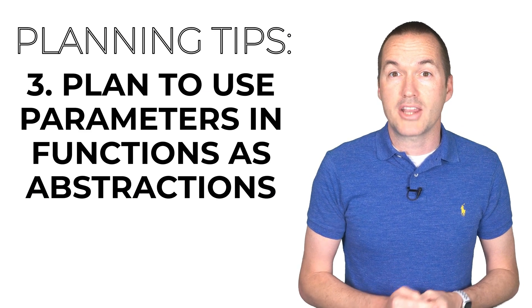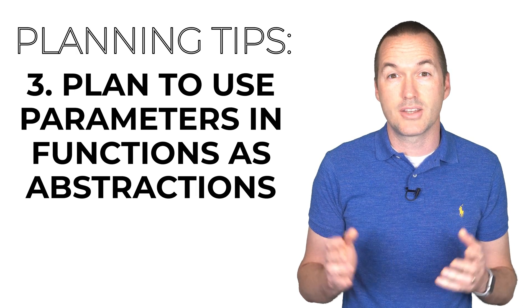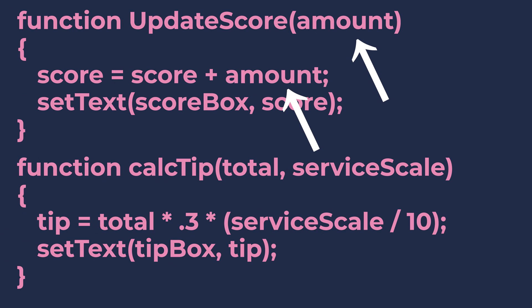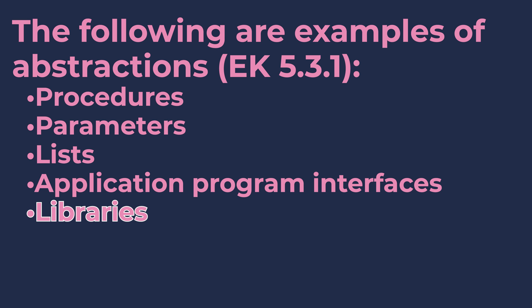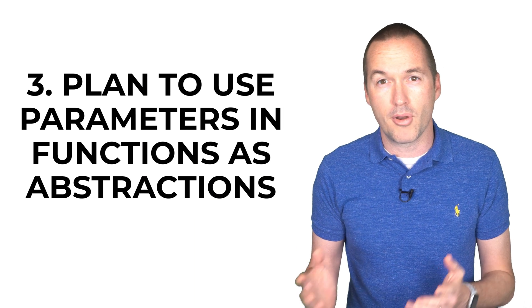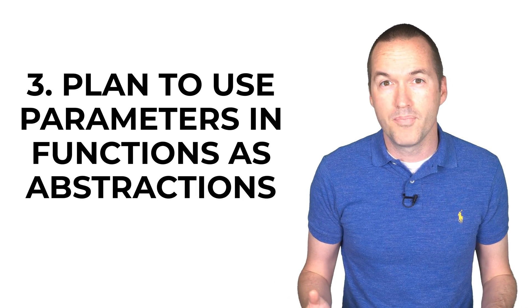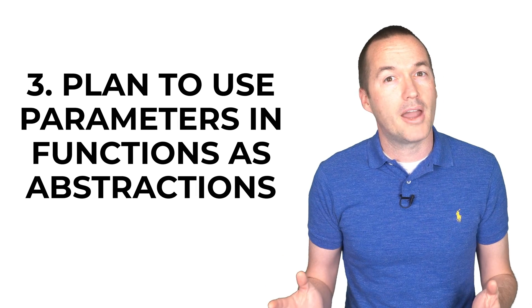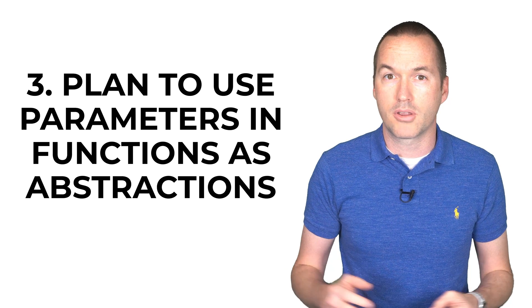Tip 3: You'll need to create an abstraction for row 7. An easy way to make sure that you correctly complete this task is to create a function that uses a parameter, which is a variable that you're going to pass into your function each time you use it. CollegeBoard does recognize other types of abstractions, such as application program interfaces (APIs) and libraries, but it's important to understand that you would need to create your own library or API — using an existing library or API call does not qualify. Library and API creation is well outside the scope of this course, so focus on procedures and parameters in your code.